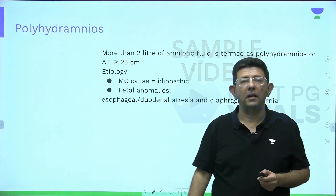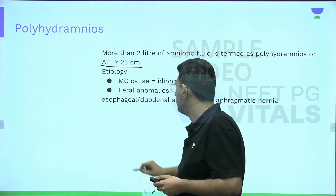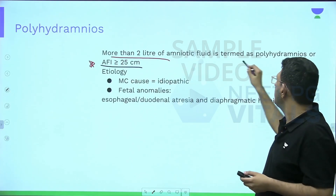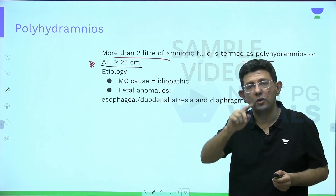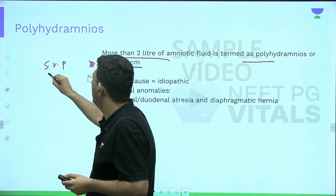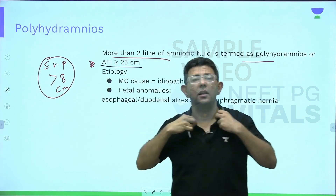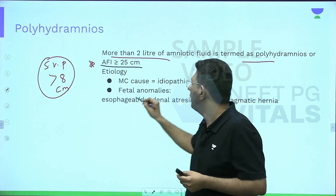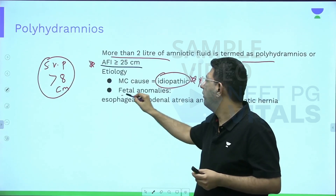There are three definitions of polyhydramnios to keep in mind: amniotic fluid volume more than two liters is poly; AFI more than or equal to 25 centimeters is poly; and a single deepest vertical pocket more than eight centimeters is also considered polyhydramnios. The most common cause is idiopathic.